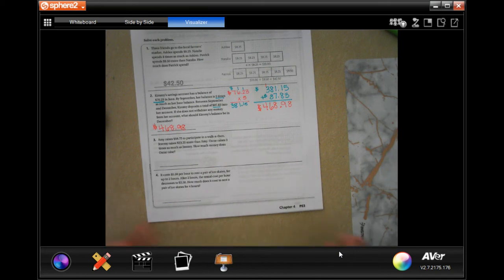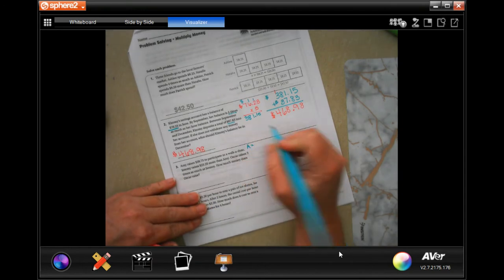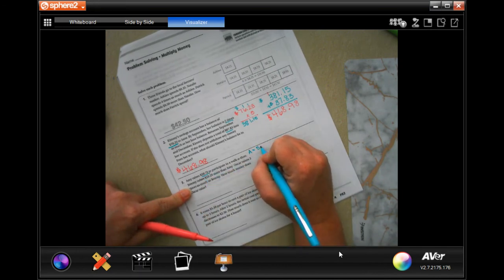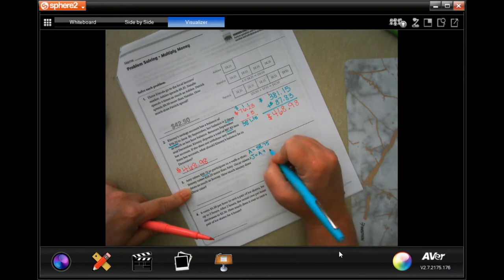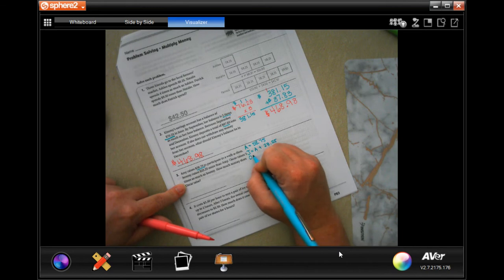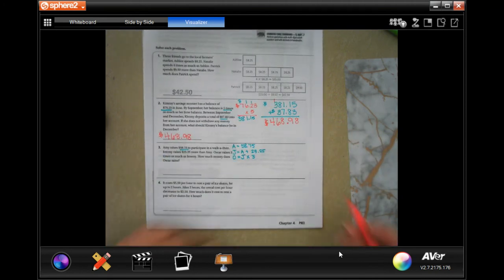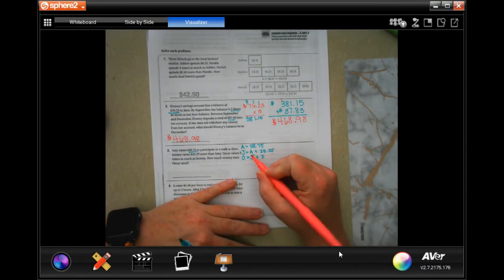Oscar raises three times as much as Jeremy, so I'm going to go ahead and write this up. Amy is $58.75. Jeremy raised what Amy raised plus $23.25, and Oscar raised what Jeremy raised times 3. First we need to add up what Amy and the extra that Jeremy raised on top of Amy so that we know how much Jeremy raised.